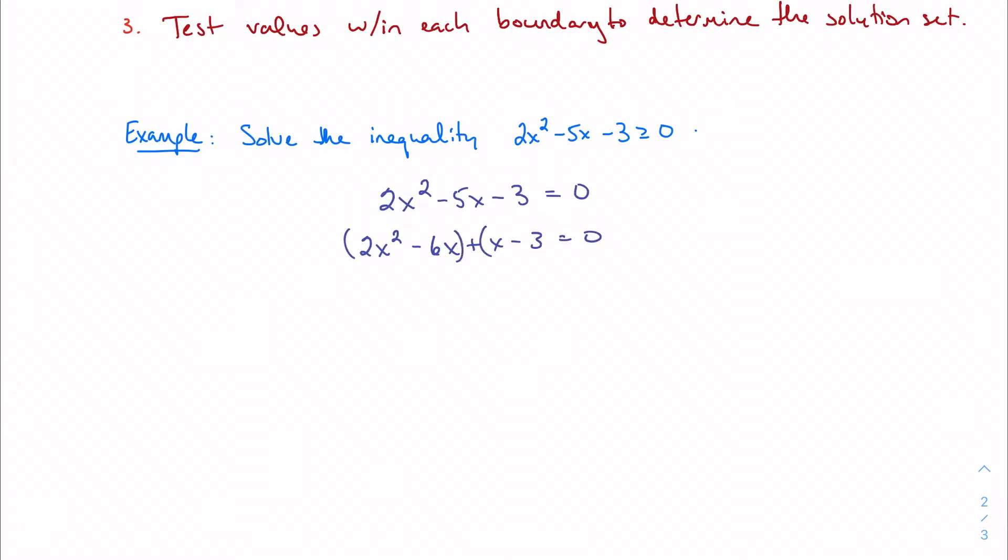Pair off, factor out. I should get 2x times (x - 3) plus 1 times (x - 3), which gives me (2x + 1)(x - 3). And I get x equals negative one-half and three as solutions.